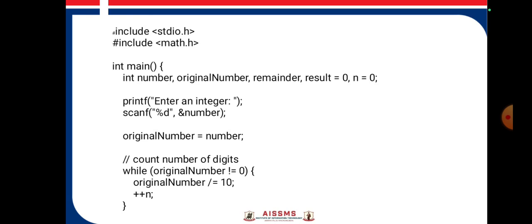digit of the original number using the modulus operator and store it in remainder. Raise the remainder to the power n (the number of digits) using the power function from the math.h library and add it